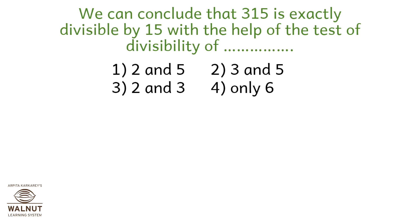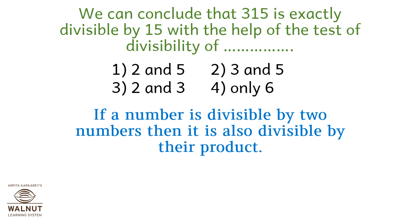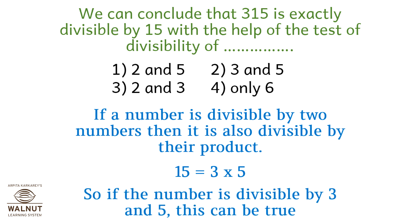We can conclude that 315 is exactly divisible by 15 with the help of the test of divisibility. If a number is divisible by two numbers, then it is also divisible by their product. 15 is equal to 3 multiplied by 5. So if the number is divisible by both 3 and 5, this can be true.